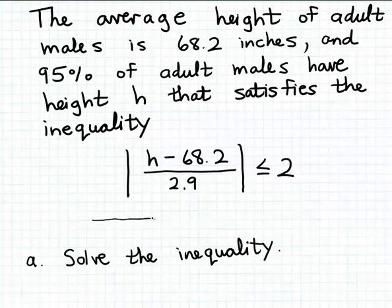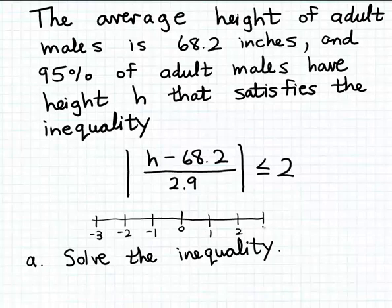Let's draw a picture of this situation on a number line. Here's zero on the number line — numbers to the right are positive, and numbers to the left are negative. If we think about quantities that are no more than 2 units away from zero, they could be in the positive direction or the negative direction away from zero. But in either case, if their absolute value is no more than 2, like the quantity h minus 68.2 over 2.9, they cannot be further than 2 units away from zero.